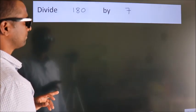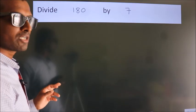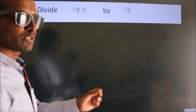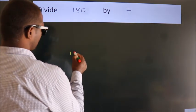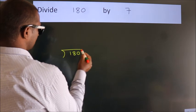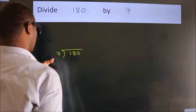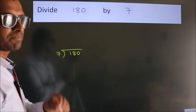Divide 180 by 7. To do this division, we should frame it in this way: 180 here, 7 here. This is your step 1.